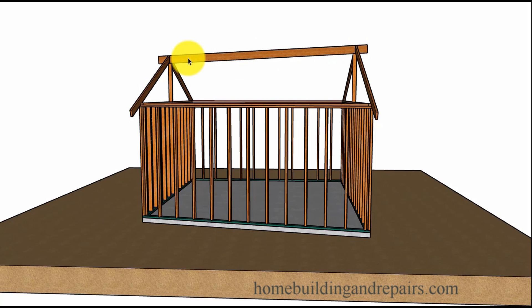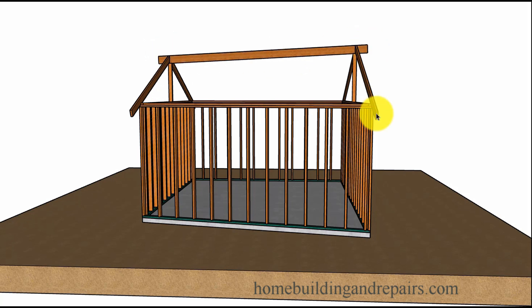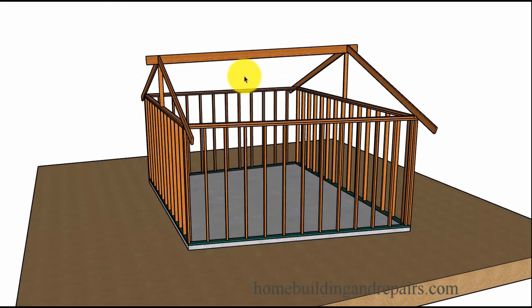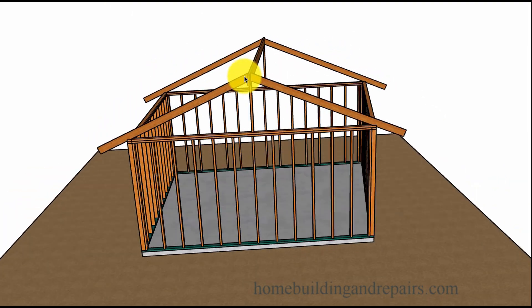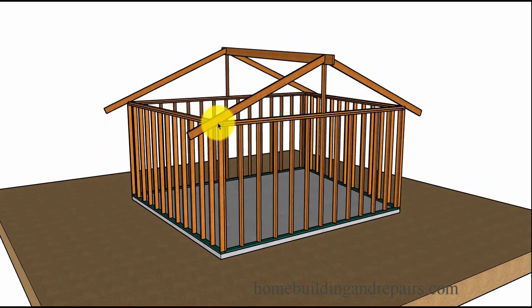The benefit of angling the ridge — and I'll try to make videos in the future to show what happens if you keep the ridge level — is that by simply angling the ridge, you're going to create a flat plane on each side. If you don't do this, the rafters are going to have a curve to them. So just keep that in mind.